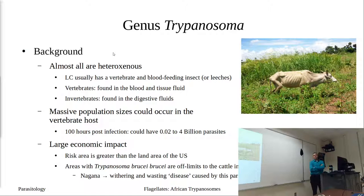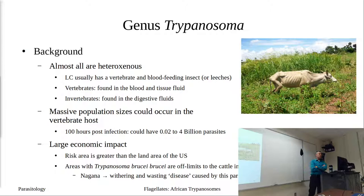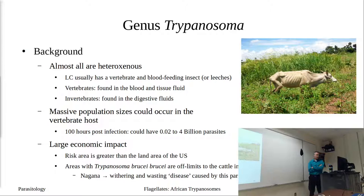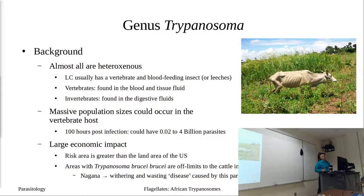Starting with the genus Trypanosoma — this is a parasitic genus where almost all of them are heteroxenous, meaning multi-host life cycle. It usually involves a vertebrate host and some blood-feeding insect host, though some amphibian trypanosomes are probably spread through leeches as well. In the vertebrate host it's found in the blood and tissue fluid; in the invertebrate host it's found in the digestive tract and salivary glands.